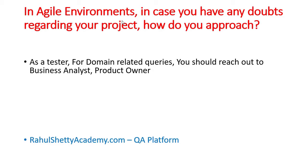Question 23: In Agile environments, if you have any doubts regarding your project, how do you approach? When working in Agile Scrum projects, for any domain-related queries you should reach out to either your business analyst or product owner. Many people say Scrum Master or manager, but they are not responsible for clearing domain-related queries. In Agile there are dedicated roles — product owner and business analyst — who analyze the complete domain and are responsible to answer all your questions. The Scrum Master's role is only to manage the team to make sure you're delivering as expected, not related to product domain questions. This answer shows your knowledge of working in Agile Scrum environments.